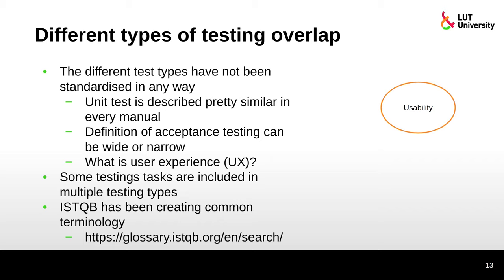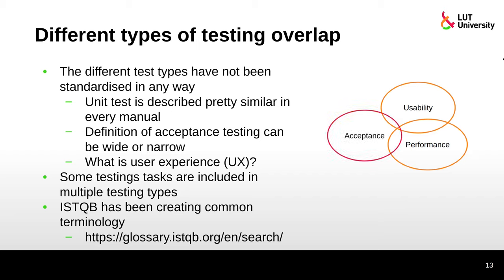Usability and performance overlap — in usability you don't want a slow system, but that's also a performance issue. Acceptance testing probably includes both usability and performance requirements. Accessibility is related to usability and relevant to acceptance testing, but accessibility and performance don't have much in common. If you map all these testing types together you get a kind of spider diagram where many things overlap.